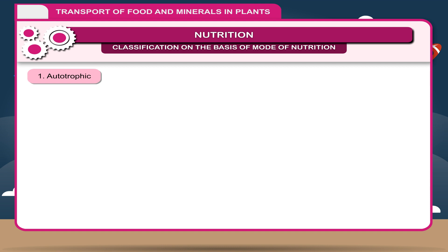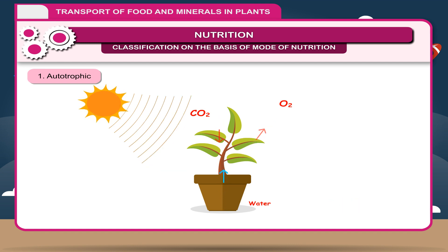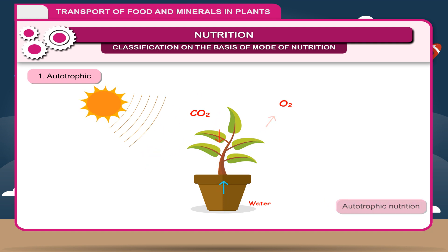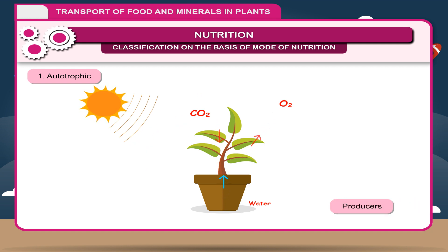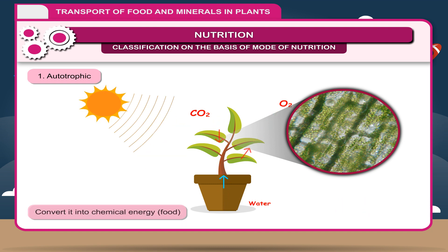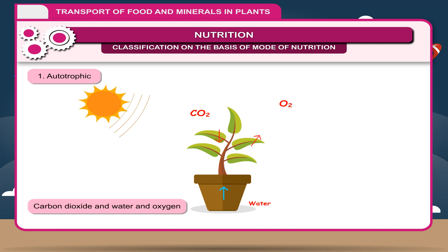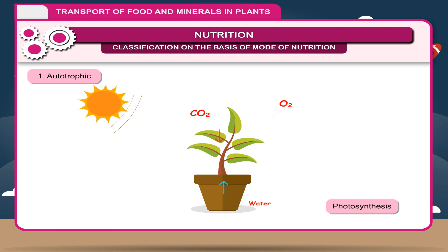Autotrophic nutrition: The organisms which prepare their own food are called autotrophs (auto = self, trophic = food), and this type of nutrition is called autotrophic nutrition. Green plants prepare their food and are also called producers. They possess chlorophyll, especially in their leaves, that have the ability to utilize solar energy and convert it into chemical energy (food), with the help of carbon dioxide and water, and oxygen is released. This process is called photosynthesis.